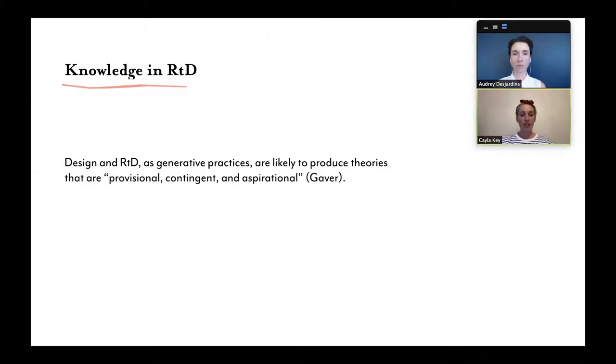Design and RTD are generative practices. This means they're likely to produce knowledges or theories that are embedded in the artifacts produced, and those knowledges and theories are inherently provisional, contingent, and aspirational. A core challenge in recent years has been to find ways to articulate how knowledge produced via RTD is valid or reliable, while remaining true to the approach, which is often open and messy.